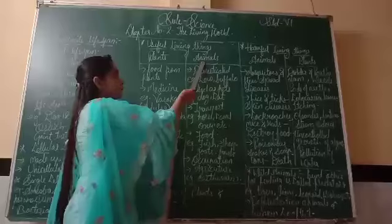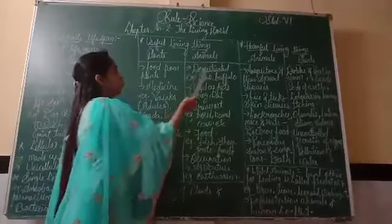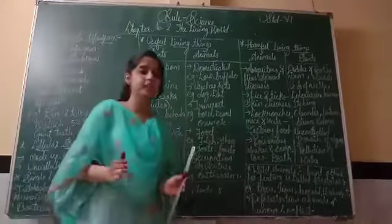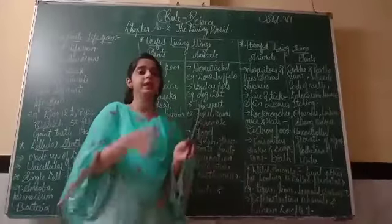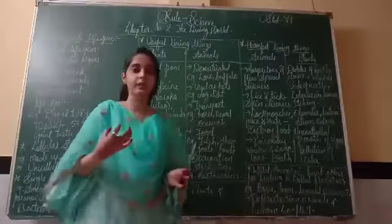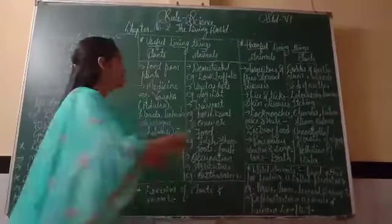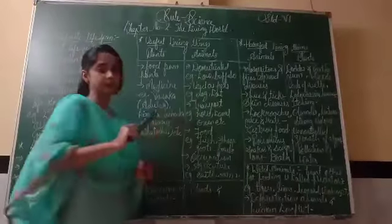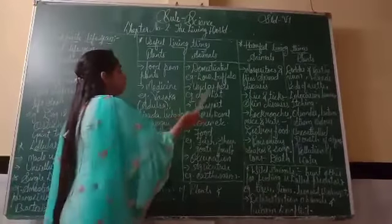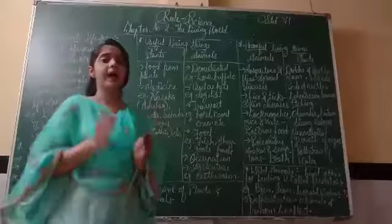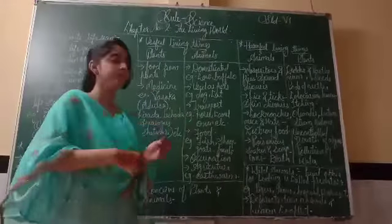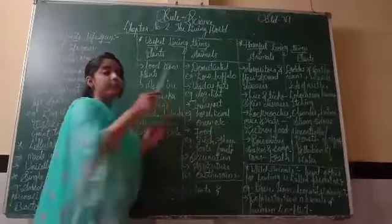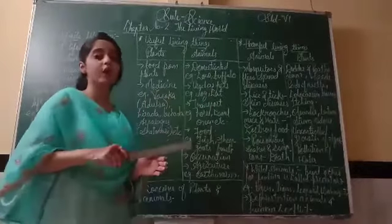Next is useful animals. The first point is domesticated animals — animals which live in our surrounding or at our house. We have domestic animals like cow and buffalo, which give us milk. Next, some animals we use as pets at home, like dogs and cats. We keep them at home for safety.